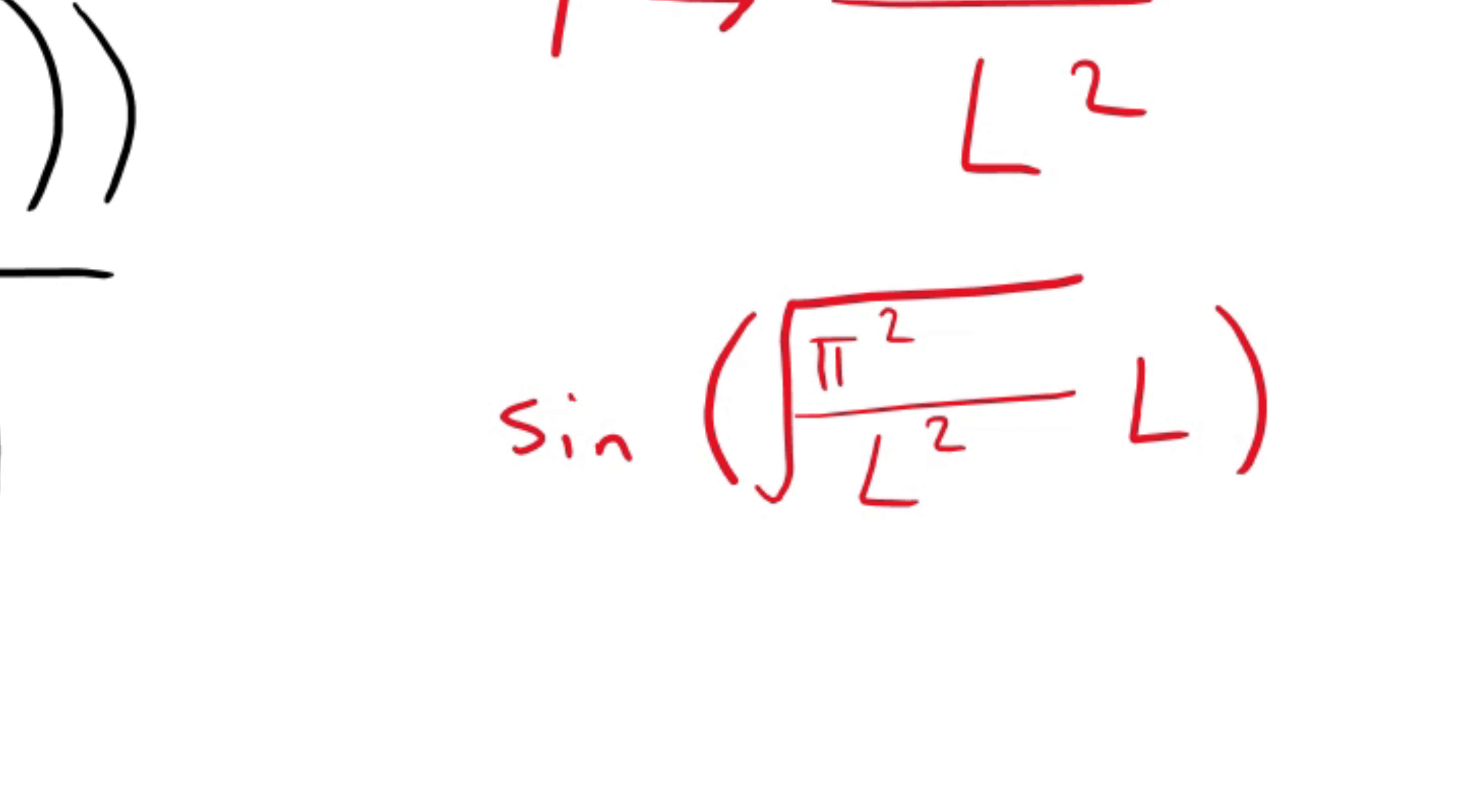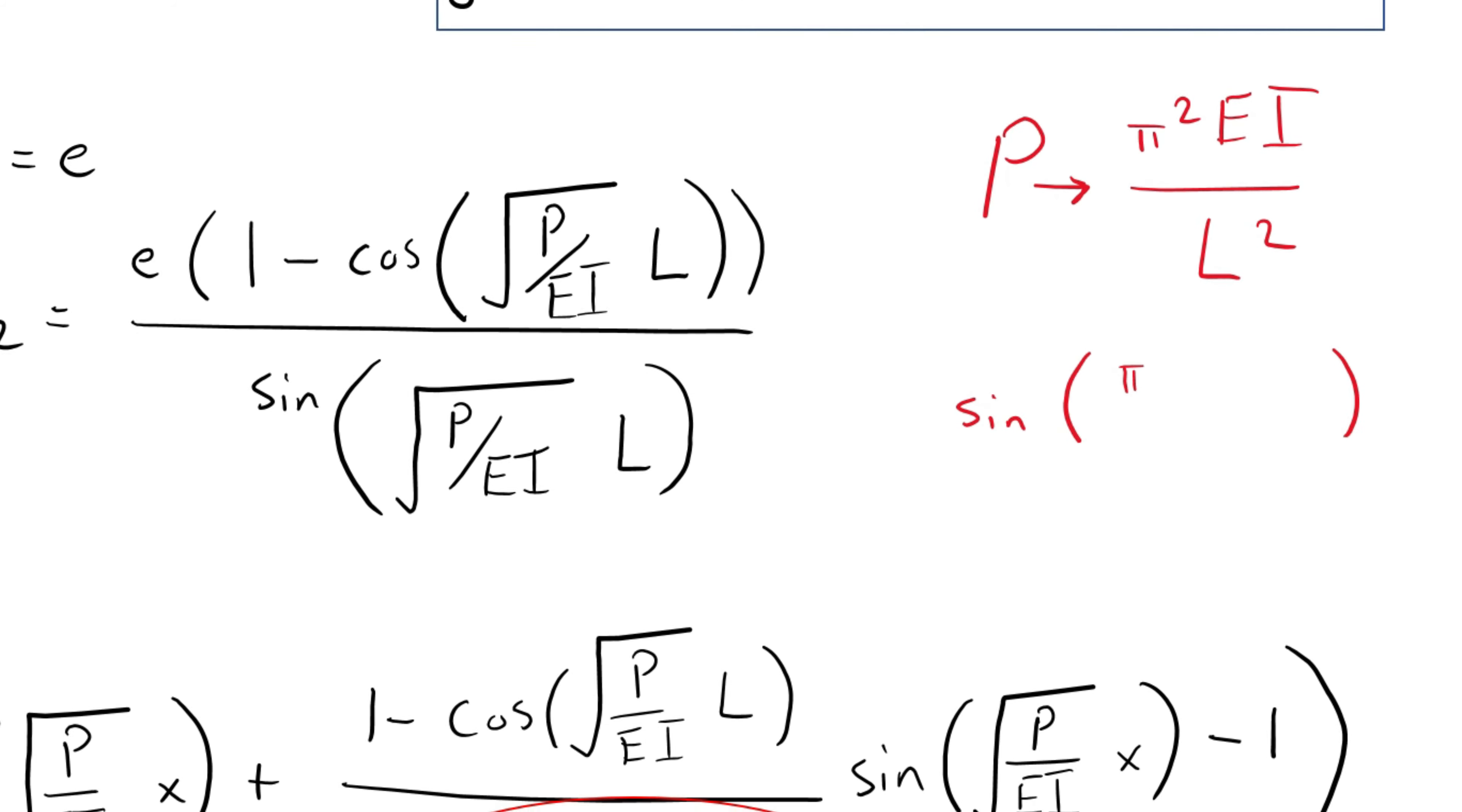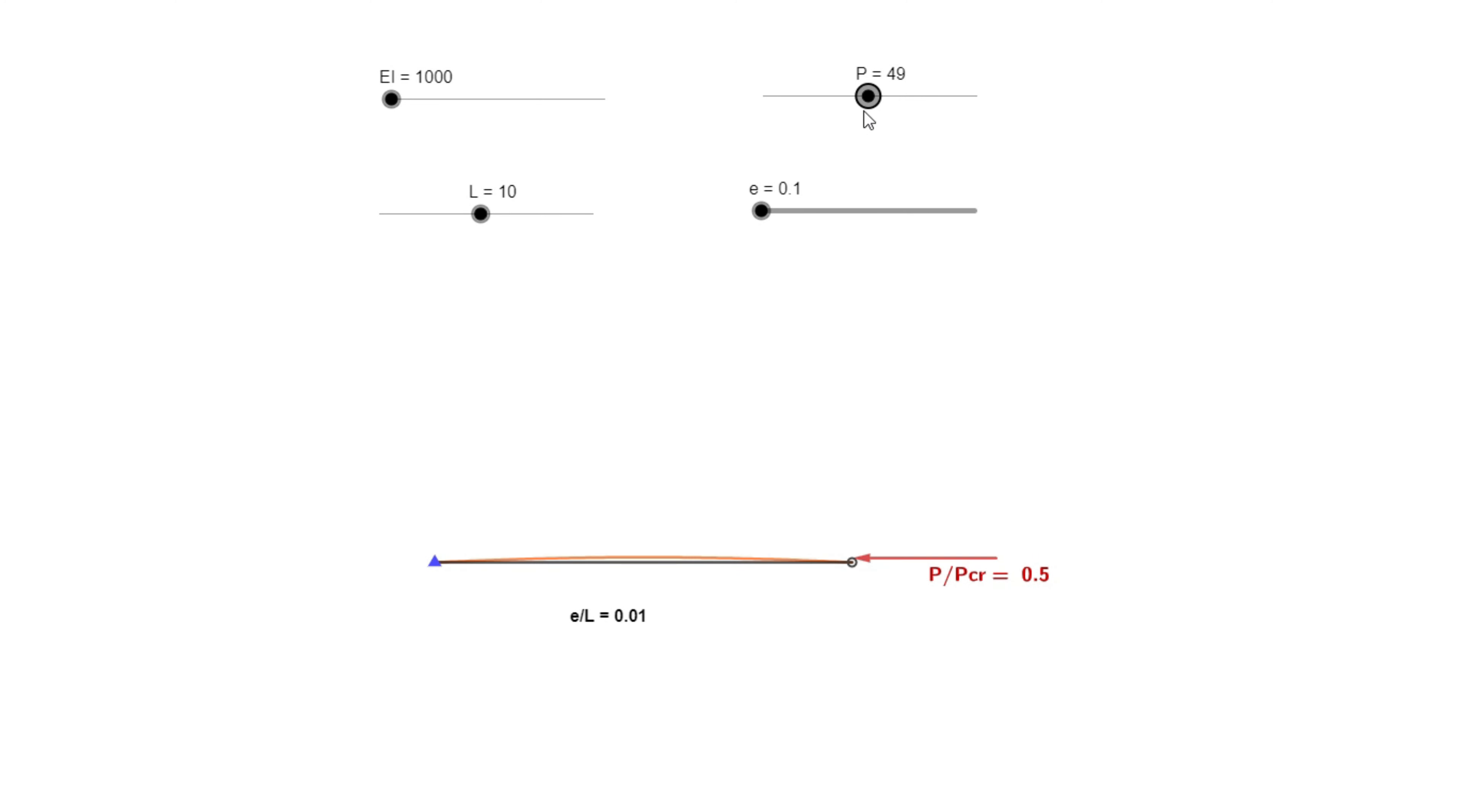Let's see what happens when the value of the applied load P approaches the critical load obtained from an axially loaded beam without eccentricity. We can have a look at this term. The EI term would cancel. The square term vanishes from the square root and the lengths cancel. Sine of pi is zero, and thus we know that the term approaches zero. When the term approaches zero, the displacement approaches infinity.